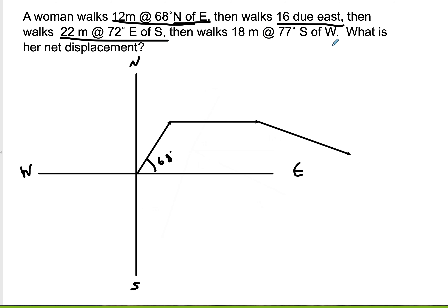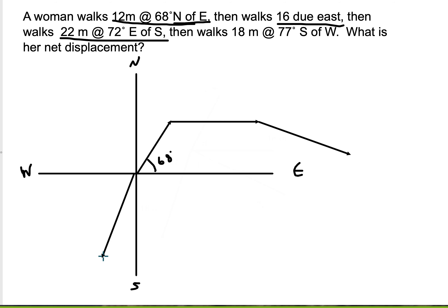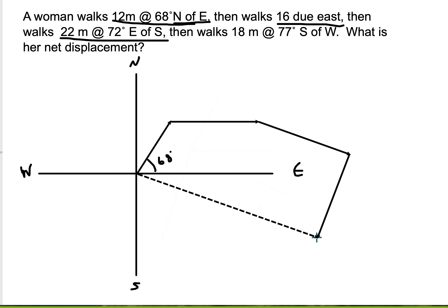Finally, I'm walking 18 meters at 77 degrees south of west. That means I'm pointing west and turning 77 degrees south of that. So I walked up, over, down, then this final direction. The resultant — the one vector that could replace all those — I'll draw with a dotted line.